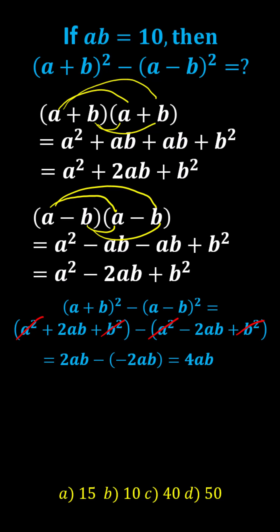And we know AB equals 10, giving us 4 times 10, which equals 40. The correct answer is C.